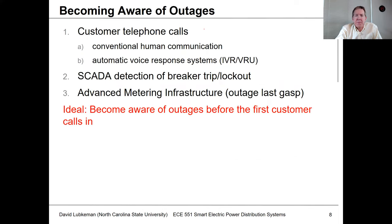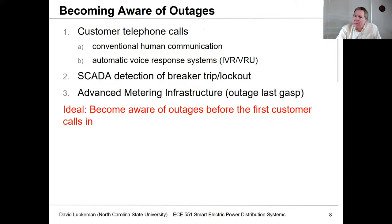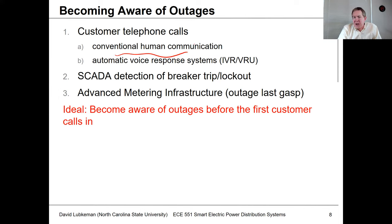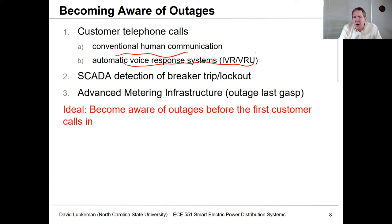The beginning process for a conventional outage management system would be the customer call. If you're out of service, you contact your utility — used to be all through phone, nowadays also through web apps. On a small utility you might have a human on the other end, but for the most part these are handled through automated voice response systems, sometimes referred to as IVR.